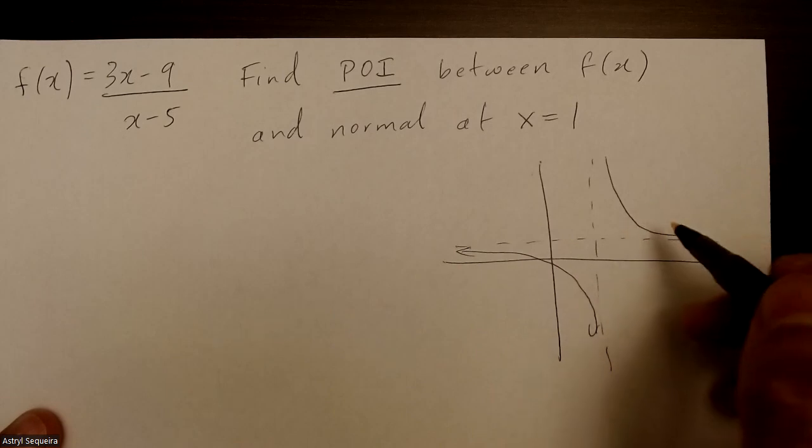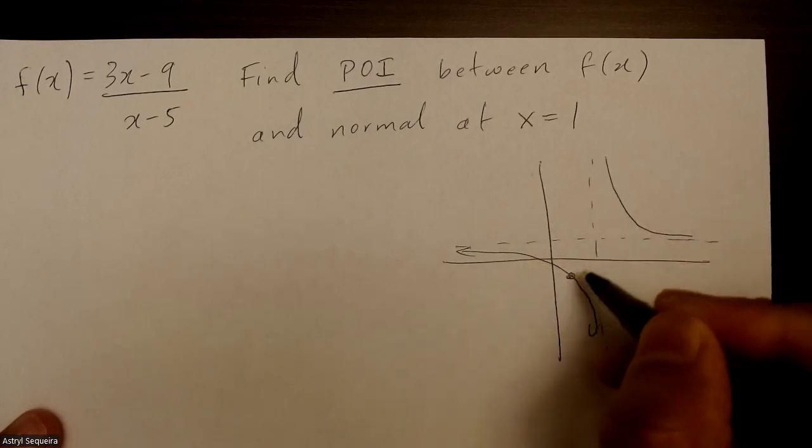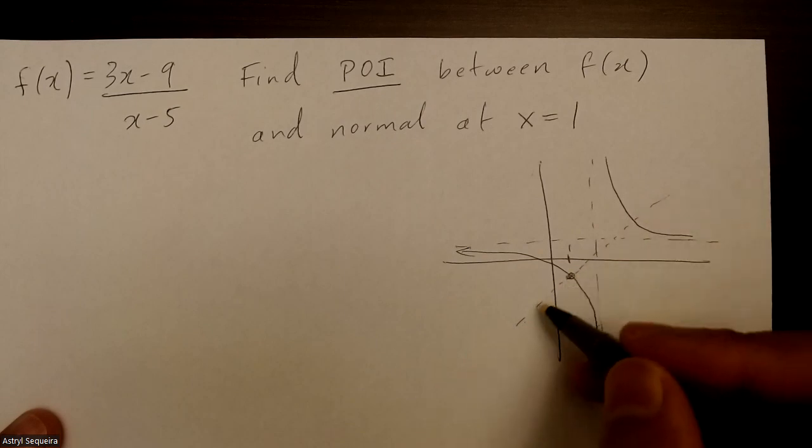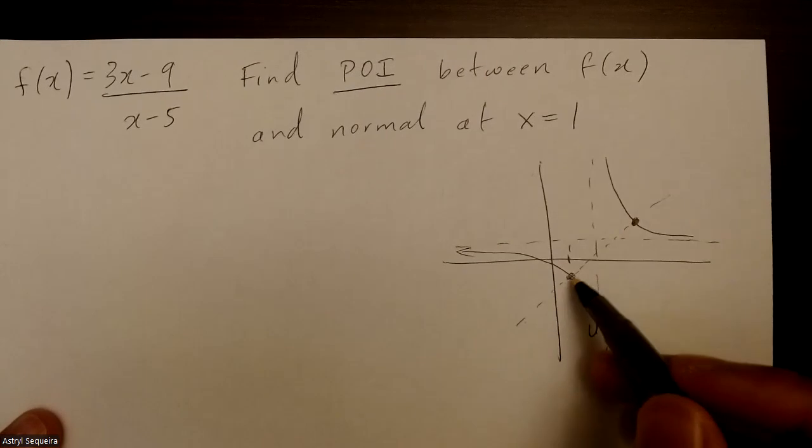And then at x equals to one, which will probably be like somewhere over here, we're going to have a normal line. We want to find the intersection of this normal line and this function, which is basically this point here, because we already know this point.